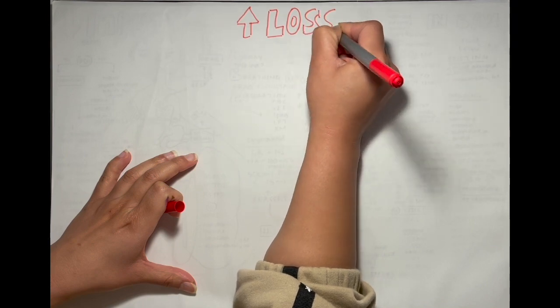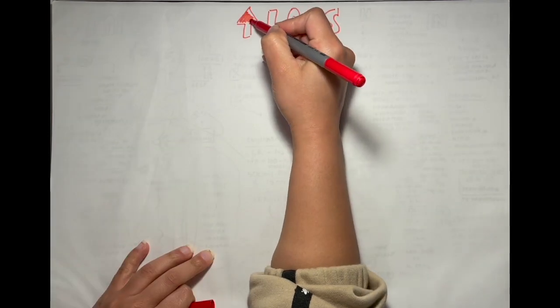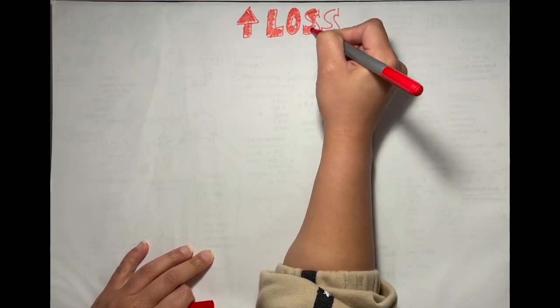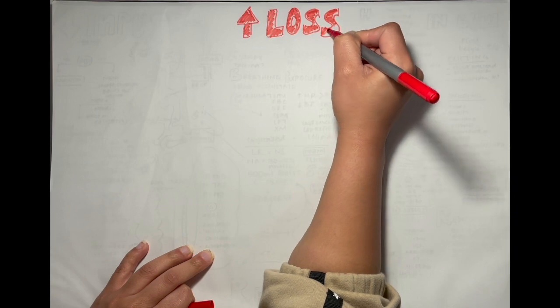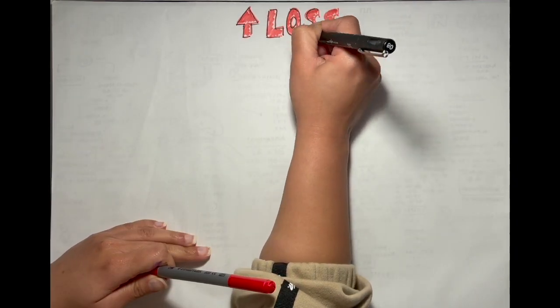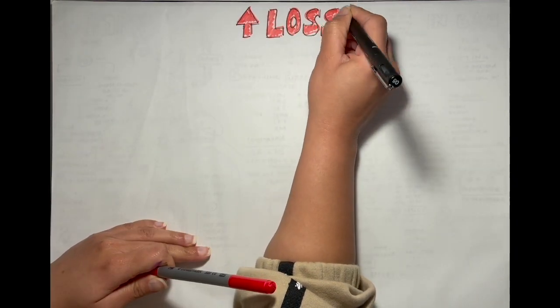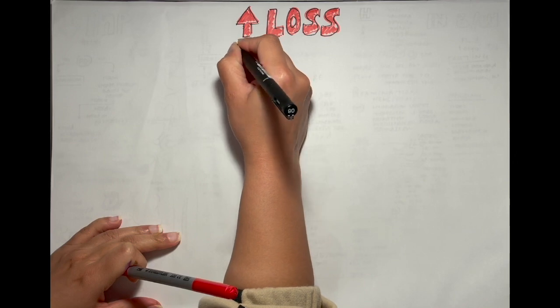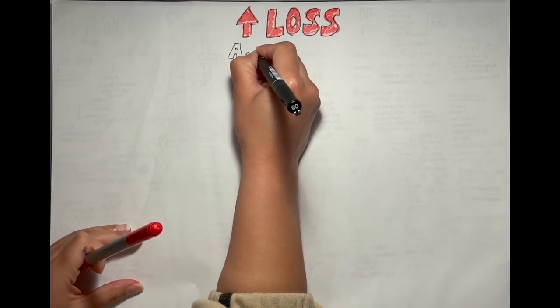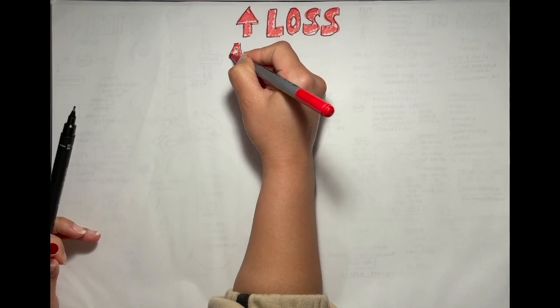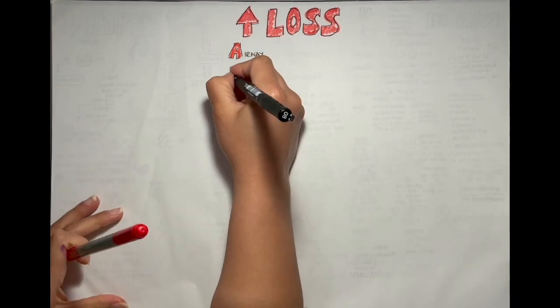In a setting where the patient is acutely unwell, whether in ED or on the ward, the patient should be assessed using the airway, breathing, and circulation principles, or ABC. Airway is assessed by talking to the patient — ask their name and age, and if they are able to answer without difficulty, their airway is clear.